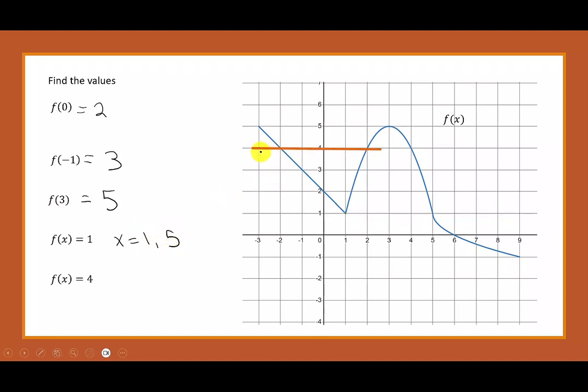When f of x is equal to 4, we can again draw a horizontal line through the value y equals 4. This shows me I have three solutions, negative 2, positive 2, and positive 4. So we'll write x is negative 2, positive 2, and positive 4.